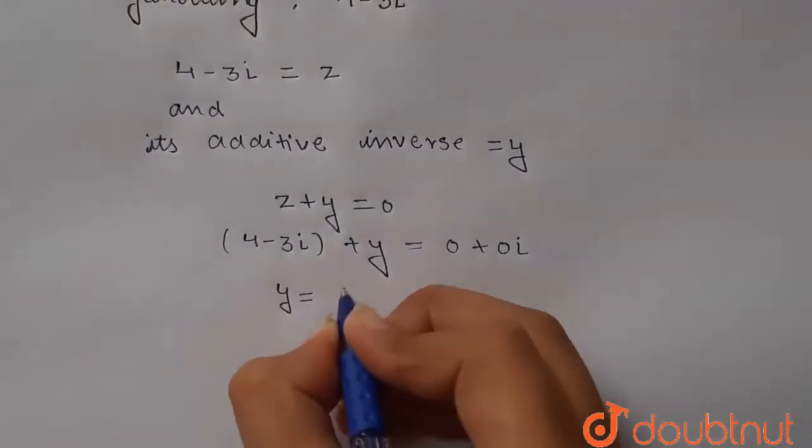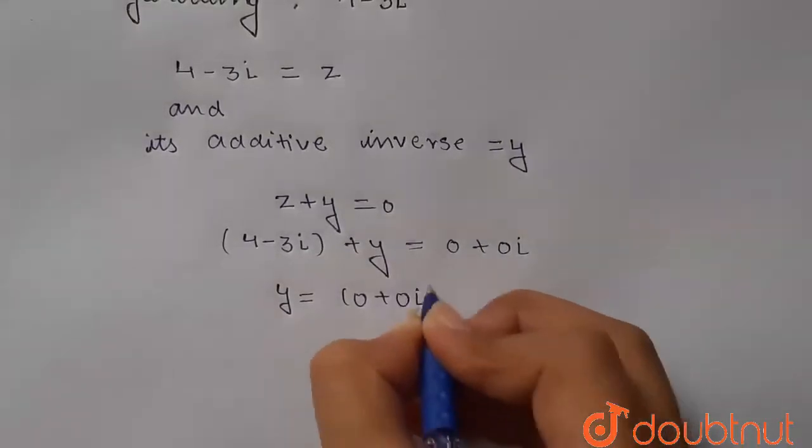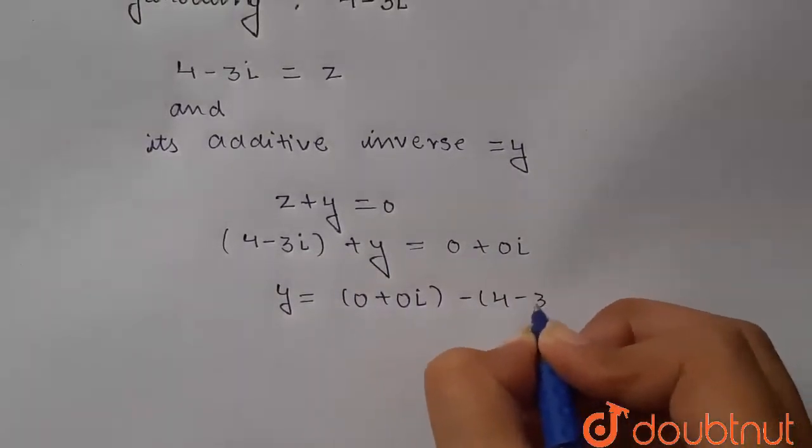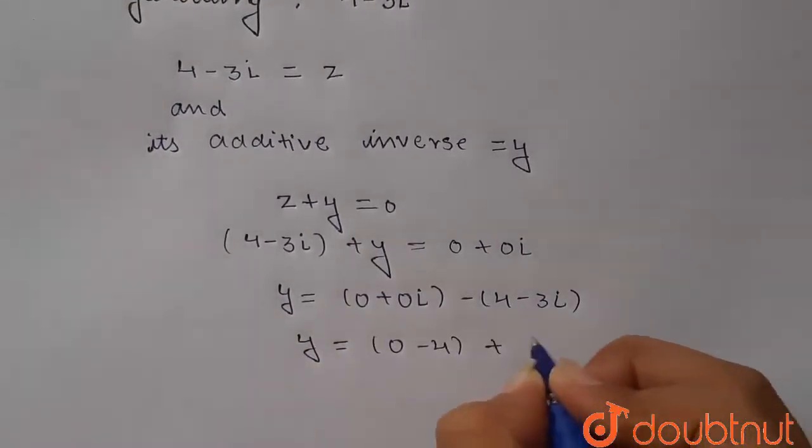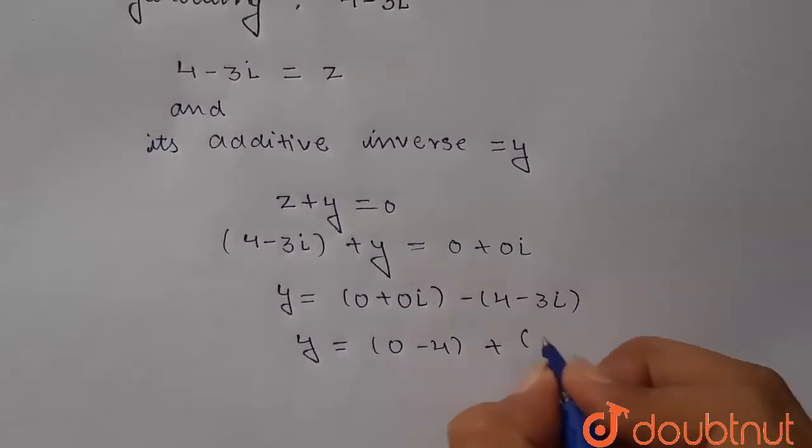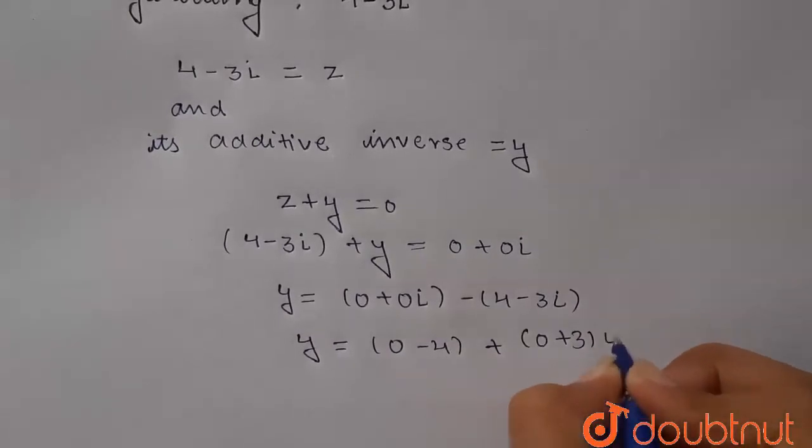y will be equal to 0 plus 0i minus 4 minus 3i. That means y will be equal to 0 minus 4 plus i - I'm taking them together - so that is 0 plus 3i.